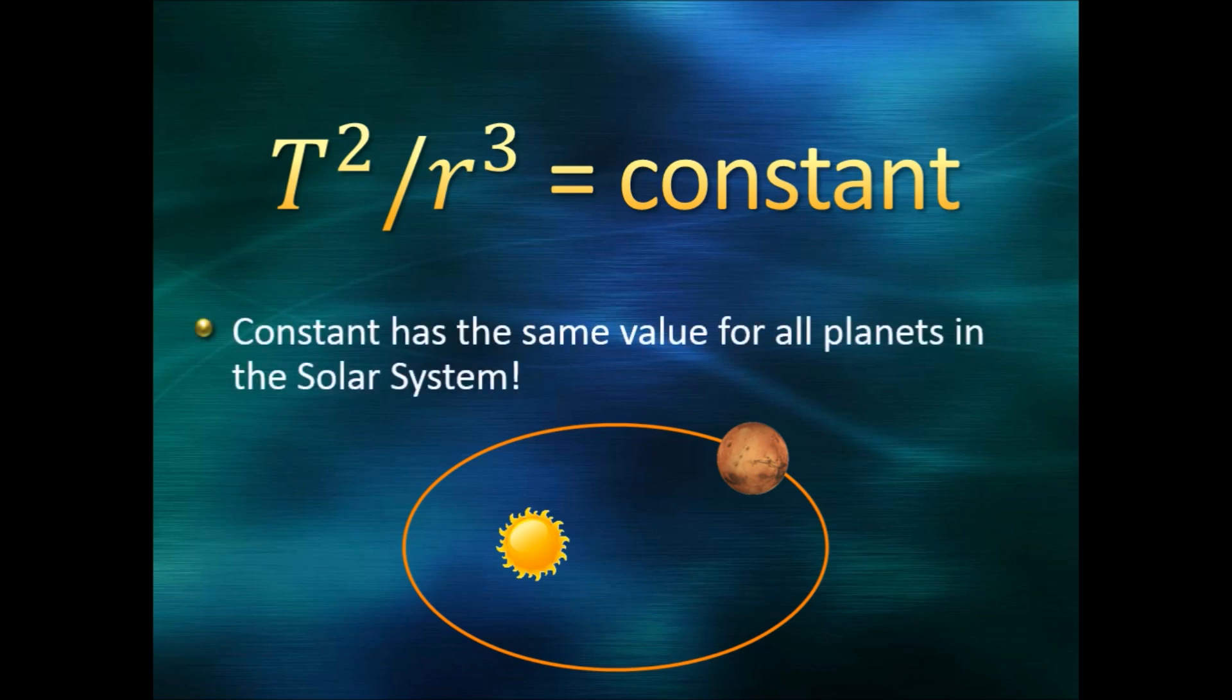What's more, the constant has the same value for all planets. Earth doesn't give you a different number from Mercury. It gives you the same number. If you take T squared divided by r cubed for one planet, and take T squared over r cubed for a different planet, you get the same result.